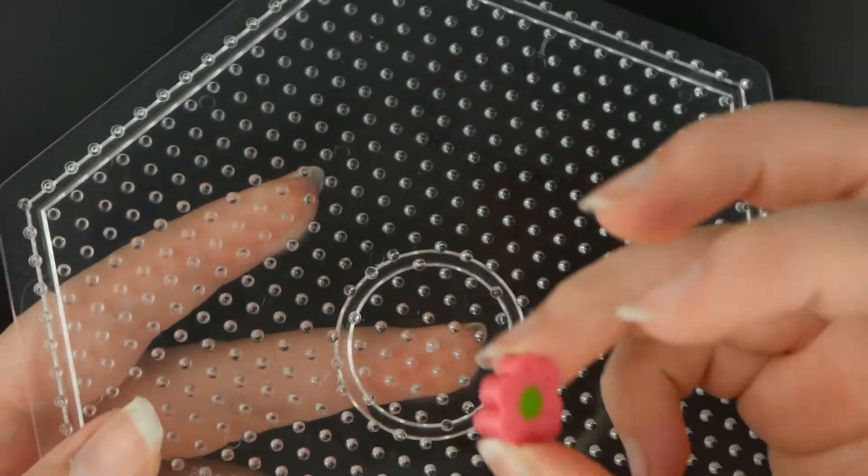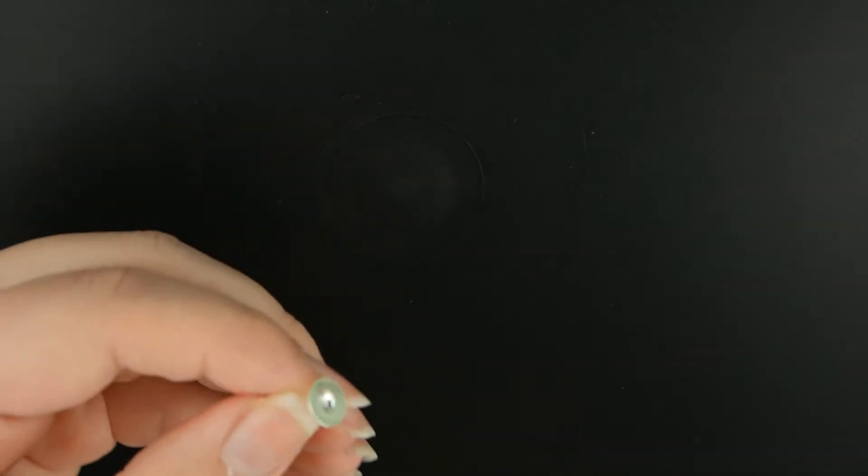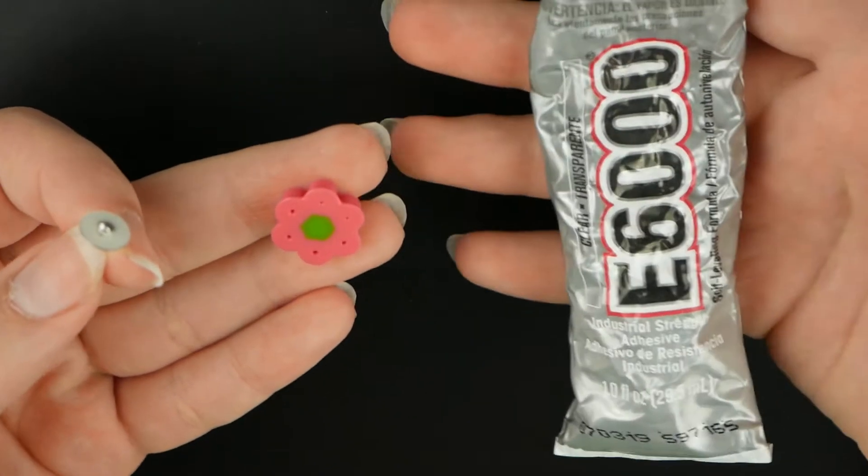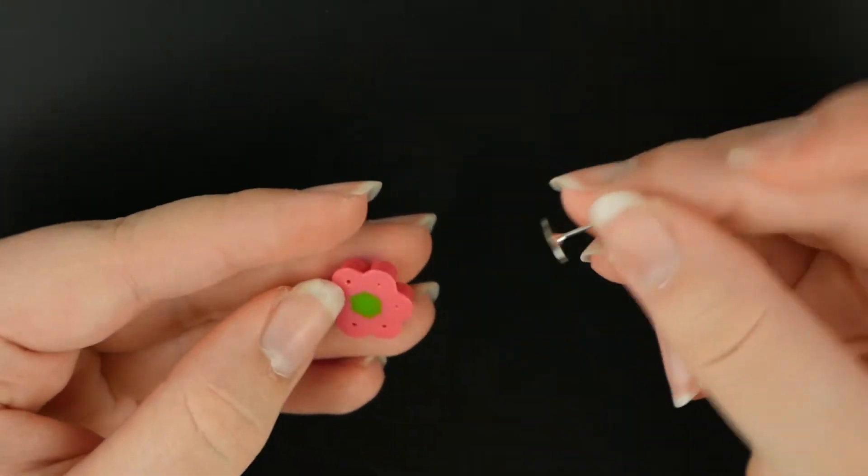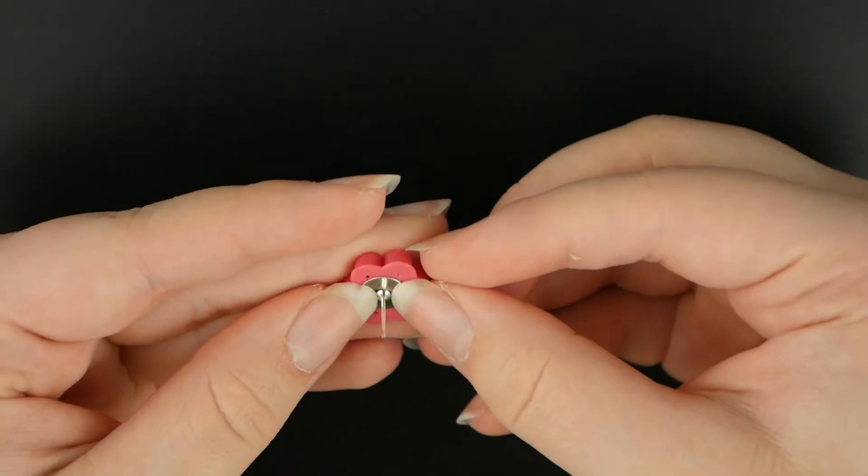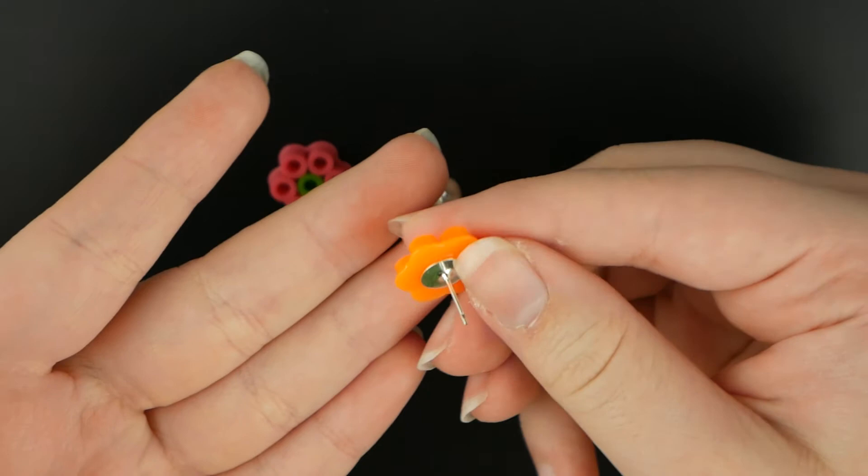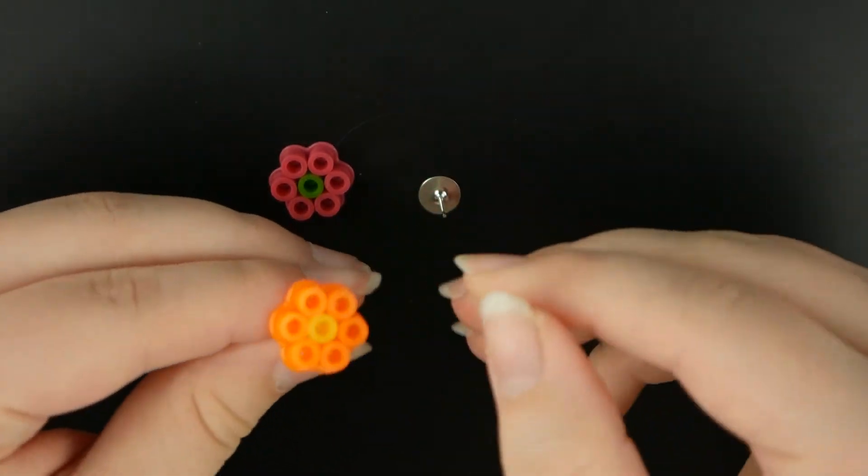The first thing you're going to do is just make your flowers. I'm not going to show you how to do that since I already did that. You're going to need your little Perler bead flowers here. You're going to want to take some of your glue and put it on the back of your flower and then put the stud on the back there.